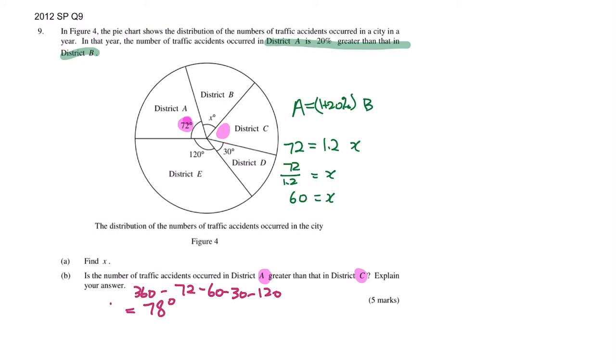District C is 78 degrees and District A is 72 degrees. Which one is greater? Obviously 78 is bigger than 72, so more traffic accidents happen in District C. District C is greater than A.